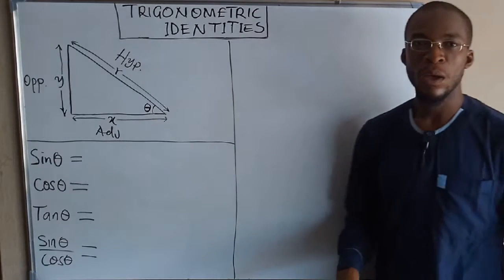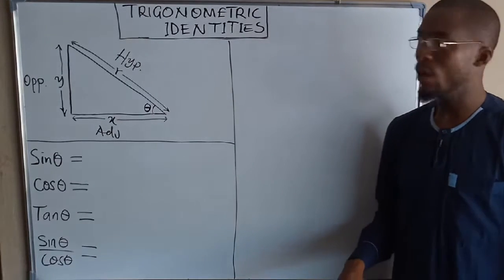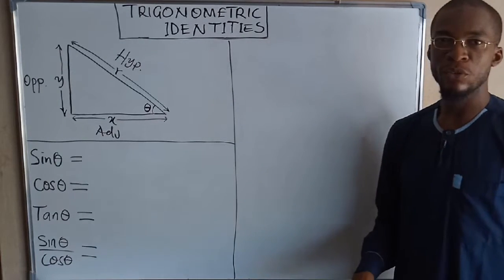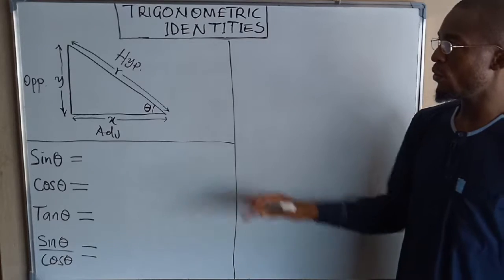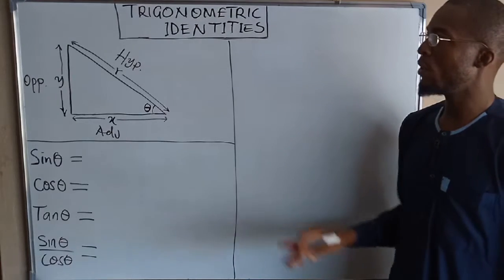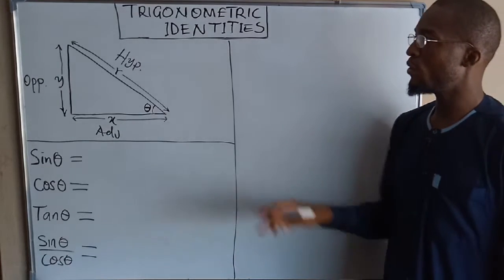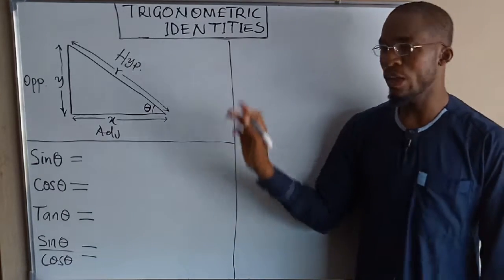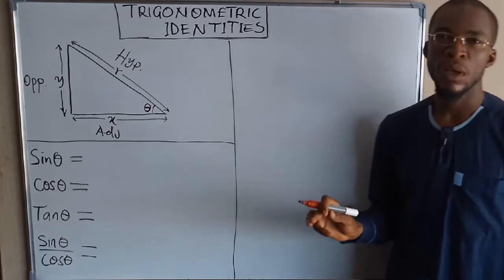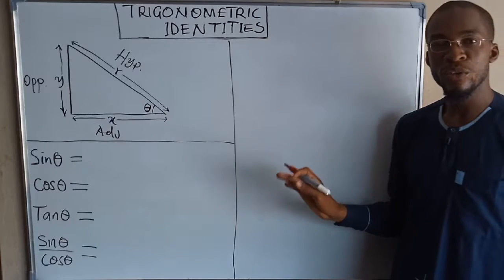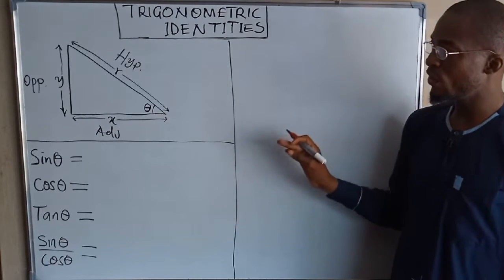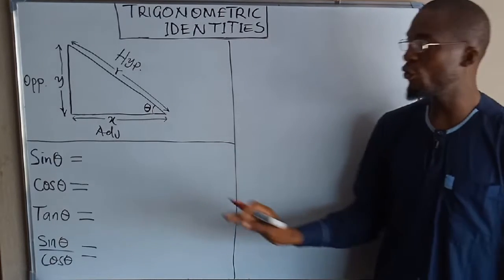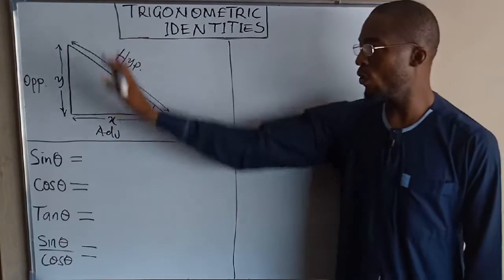Good morning, welcome to another episode of Master Tutorial. Today we are going to look at trigonometric identities. Trigonometric identities are equations that are only true for right angle triangles.